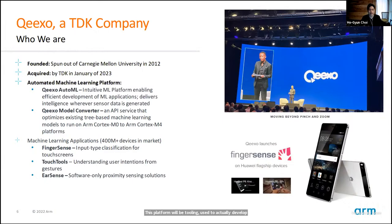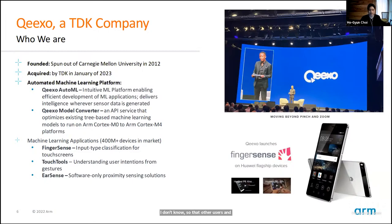The Keekso AutoML platform was actually the tooling used to develop Finger Sense, Touch Tools, and Ear Sense internally. Keekso then productized AutoML so that other users and embedded developers could also access this automated machine learning platform.